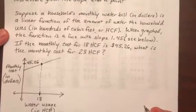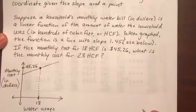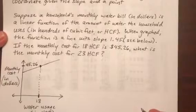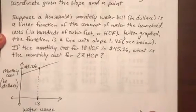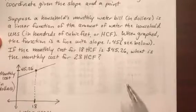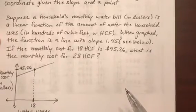If the monthly cost for 18 HCF is $45.26, what is the monthly cost for 23 HCF? This feels like a foreign language. Let's see if we can translate this.